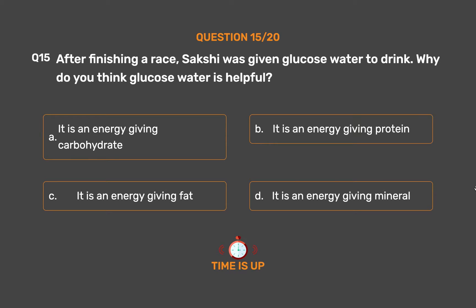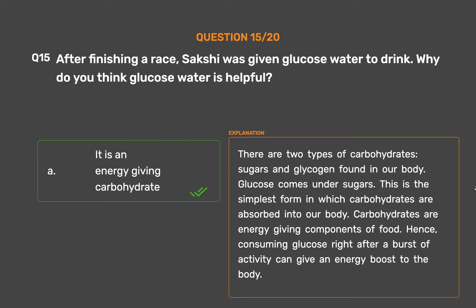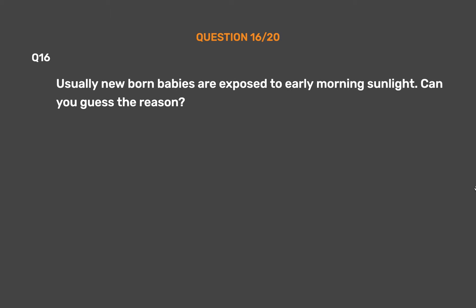The correct answer is Option A - It is an energy-giving carbohydrate. There are two types of carbohydrates: sugars and glycogen found in our body. Glucose comes under sugars. This is the simplest form in which carbohydrates are absorbed into our body. Carbohydrates are energy-giving components of food. Hence, consuming glucose right after a burst of activity can give an energy boost to the body.